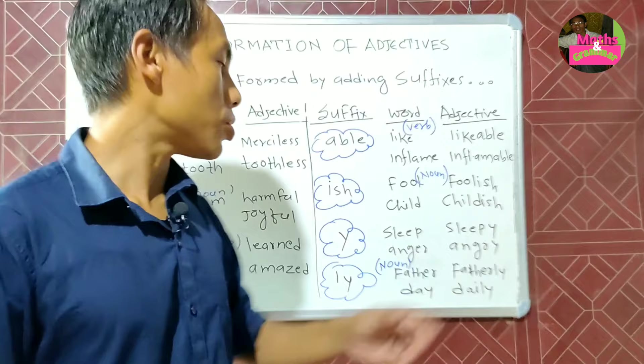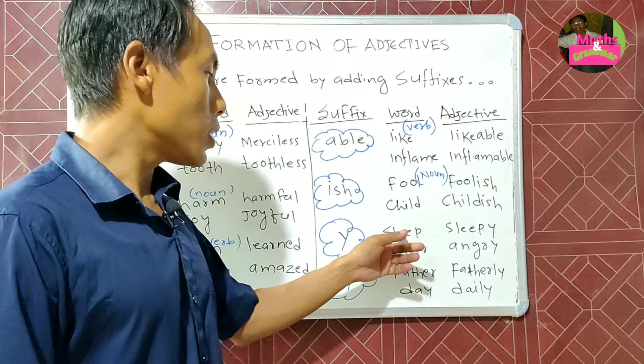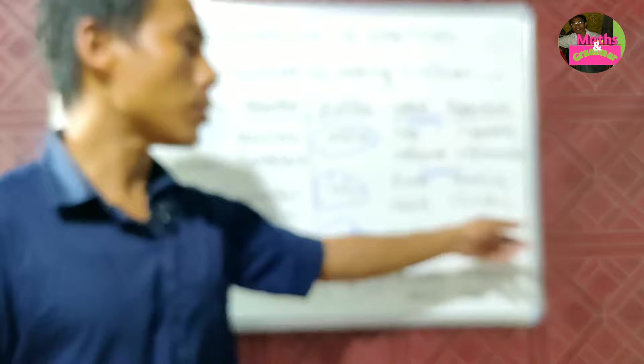'-y' is also a suffix. So 'sleep' becomes 'sleepy' by adding the letter 'y.' Similarly, 'anger' becomes 'angry.'